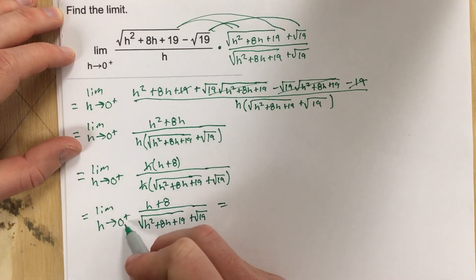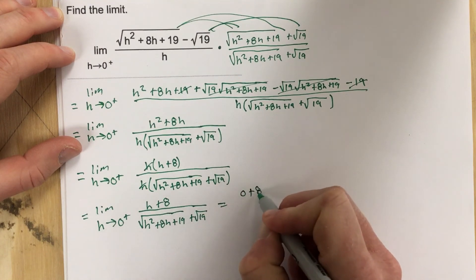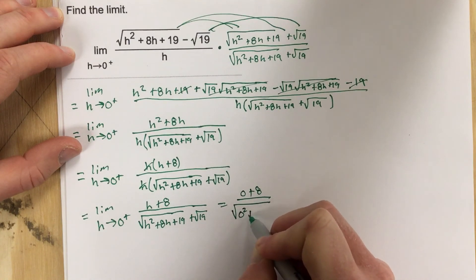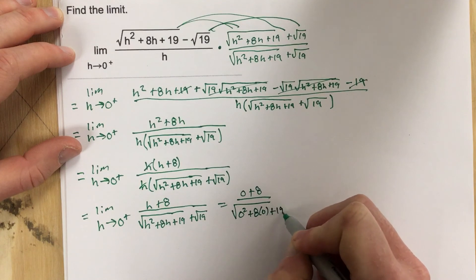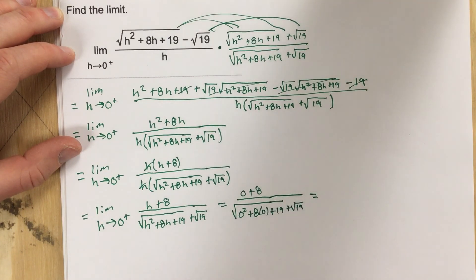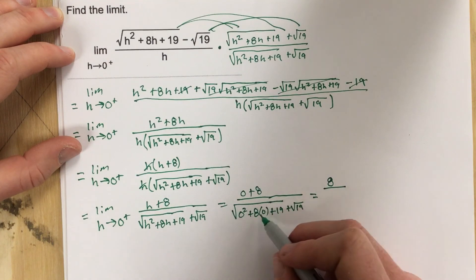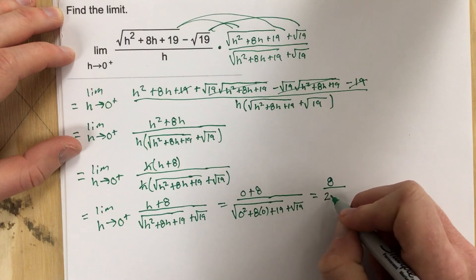When I evaluate the limit now to check to see if I can plug it in. So when I plug in 0, I end up with 0 plus 8 over on the bottom you get 0 squared plus 8 times 0 plus 19 plus root 19. We'll end up with 8 over this will give you just root 19 because these are both 0. So just root 19 plus root 19 which gives you 2 root 19.